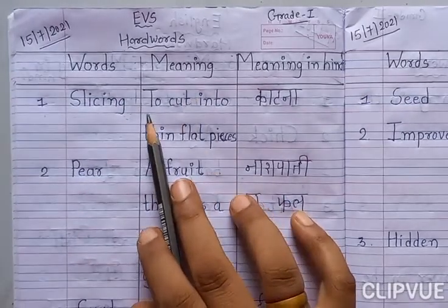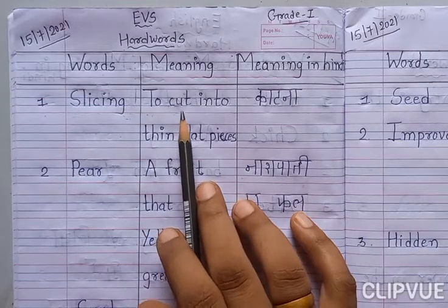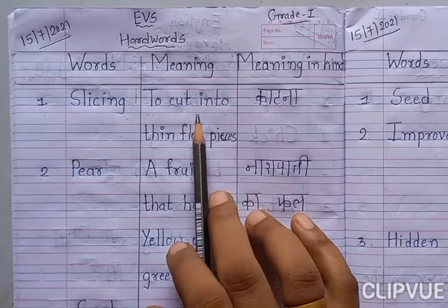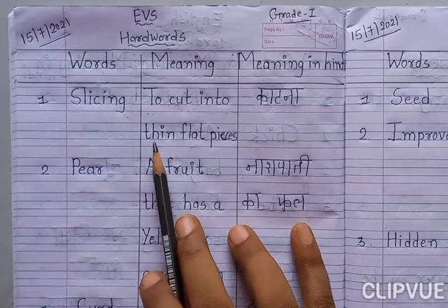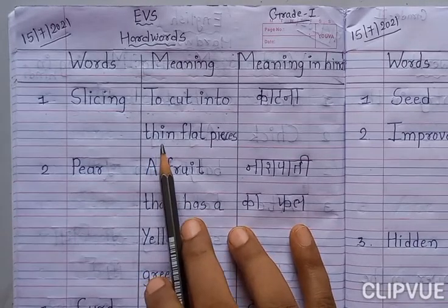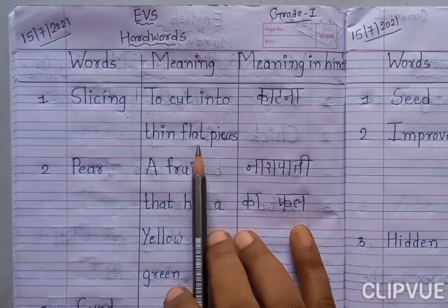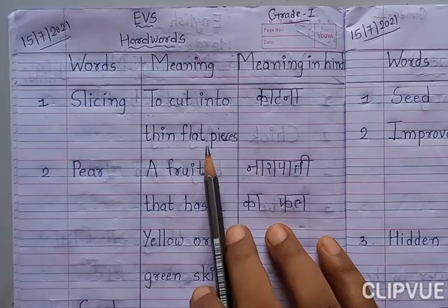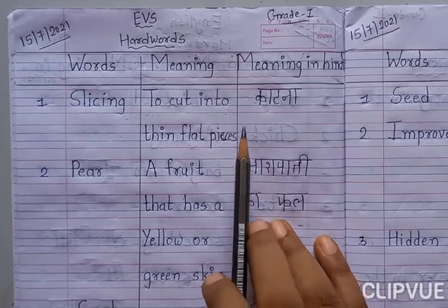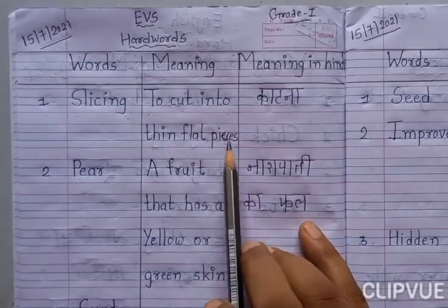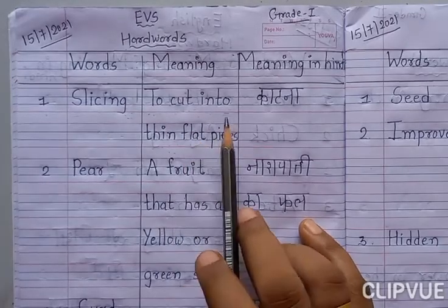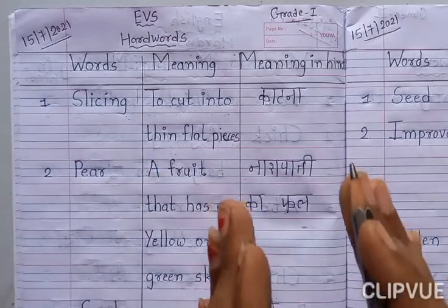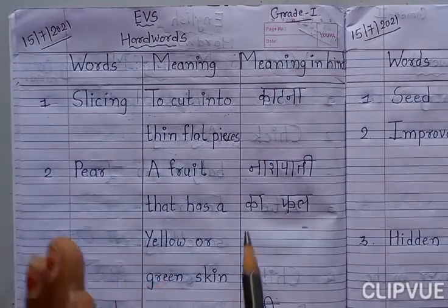English meaning: T-O, to. C-U-T, cut. I-N-T-O, into. T-H-I-N, thin. F-L-A-T, flat. P-I-E-C-E-S, pieces. So it means to cut into thin flat pieces. That is slicing.